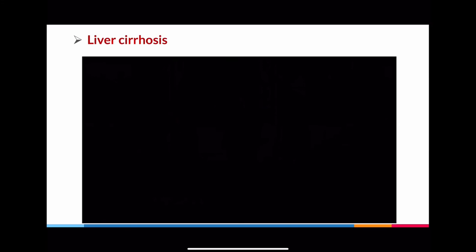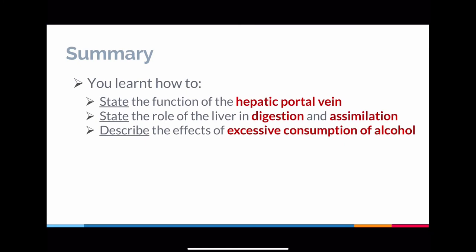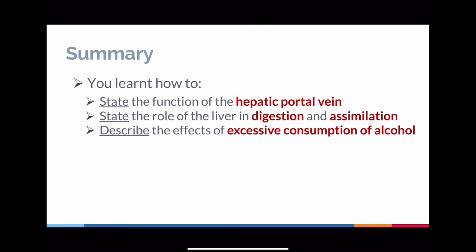As you can see from that video, alcohol consumption can cause a lot of harmful effects before we even realize it. This entire chapter has a very close link to our human diet — we started by talking about how ingestion happens, how digestion happens, how absorption happens, and we end with what alcohol can do to your liver. In summary, you learned about the hepatic portal vein, how assimilation takes place to manage nutrients, and the effects of excessive alcohol consumption on the liver. That brings us to the end of this chapter on nutrition. If you have any doubts, please feel free to check with your teachers.